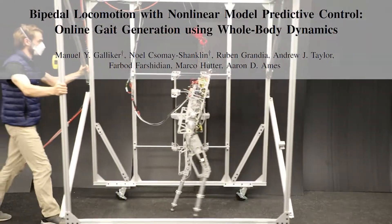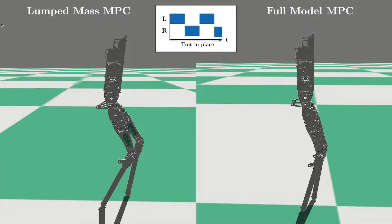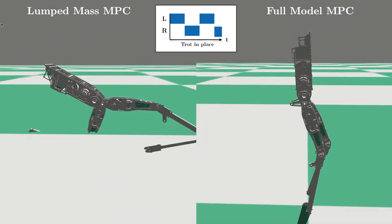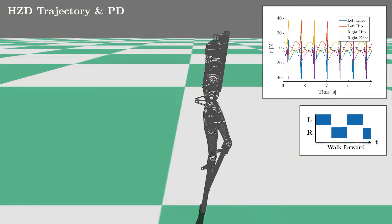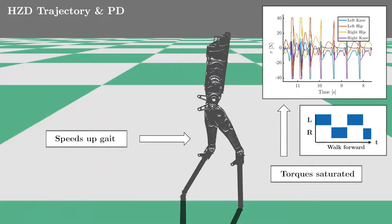In this work, we present a whole-body model predictive control approach for bipedal locomotion. The proposed control framework is compared against two baseline methods, namely a lumped mass model and the combination of an offline-generated hybrid zero-dynamics trajectory with a PD controller.